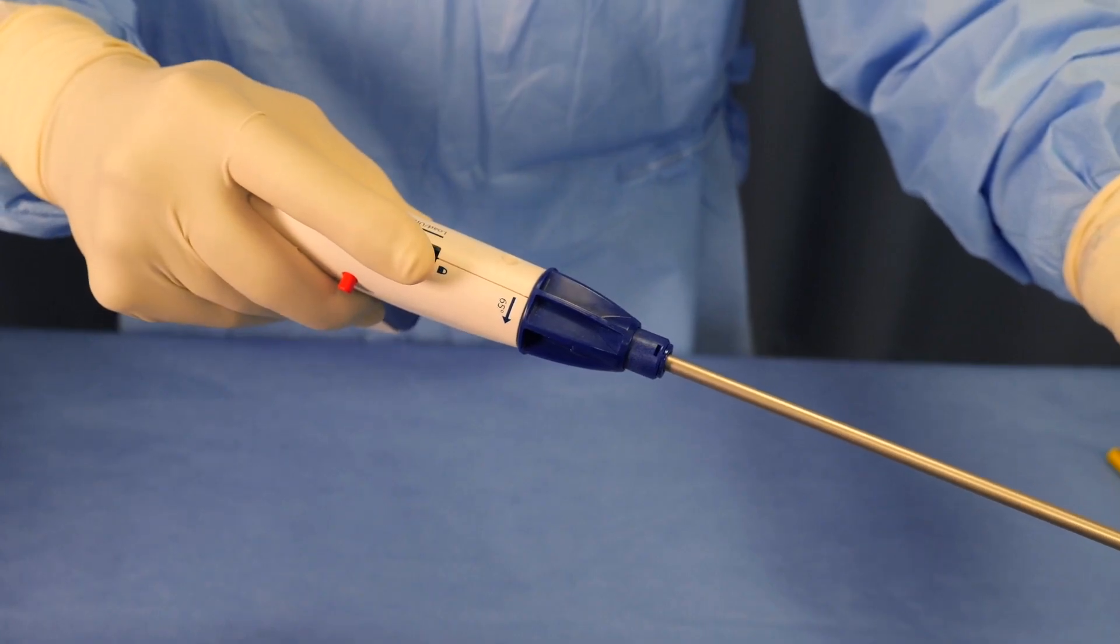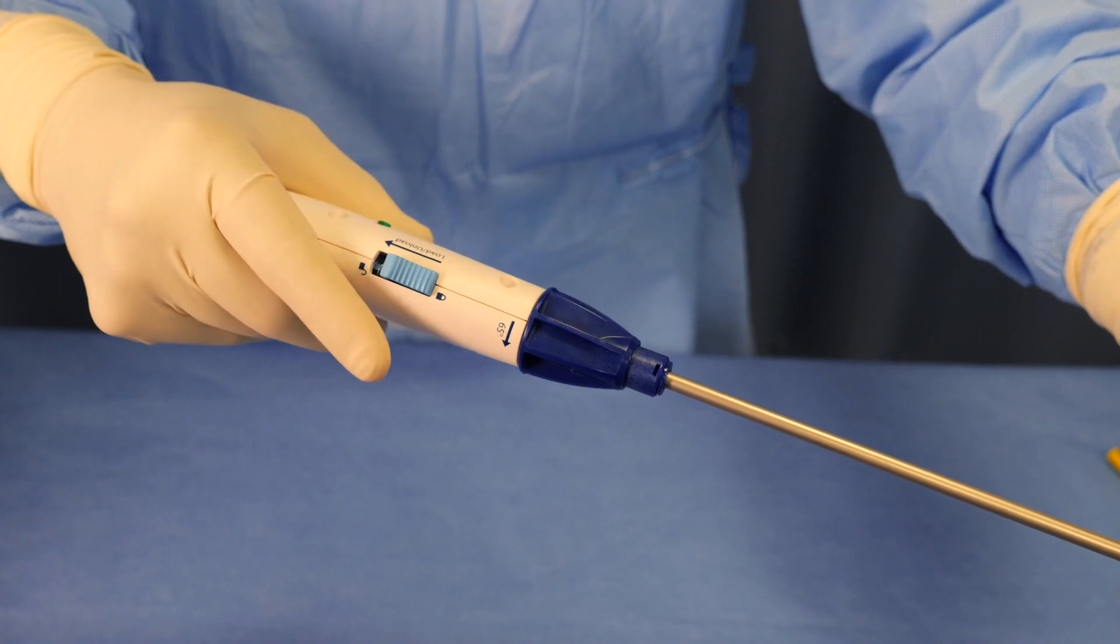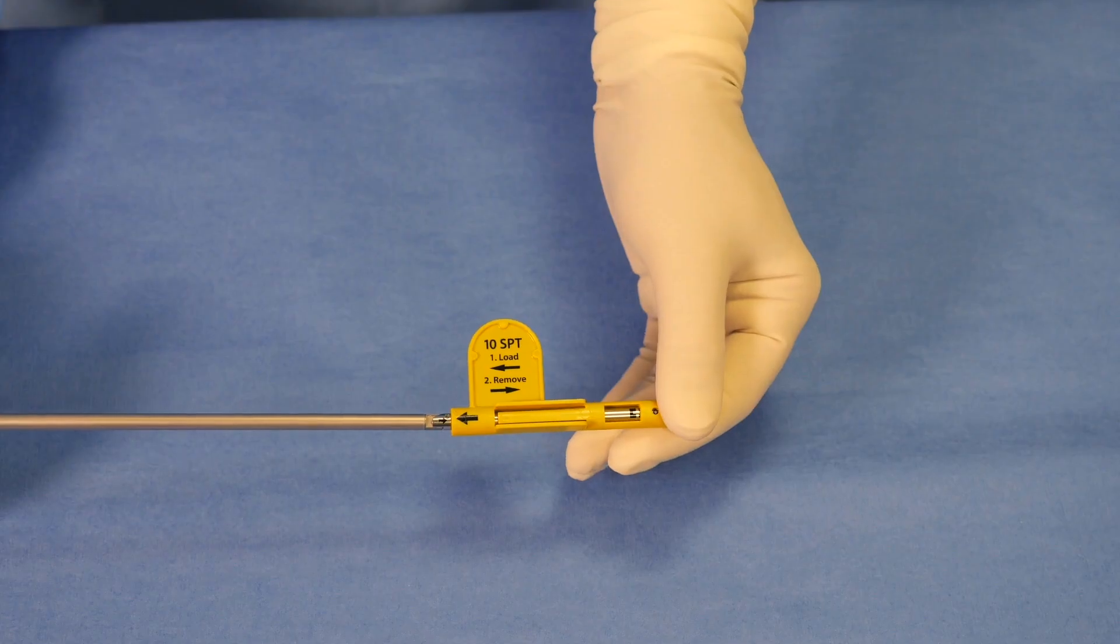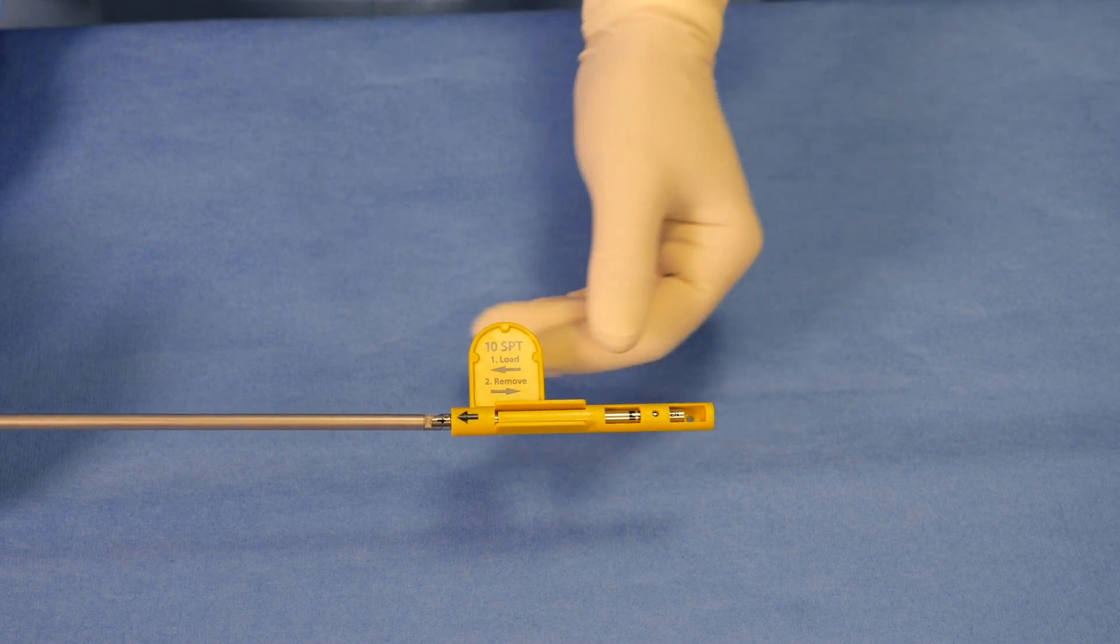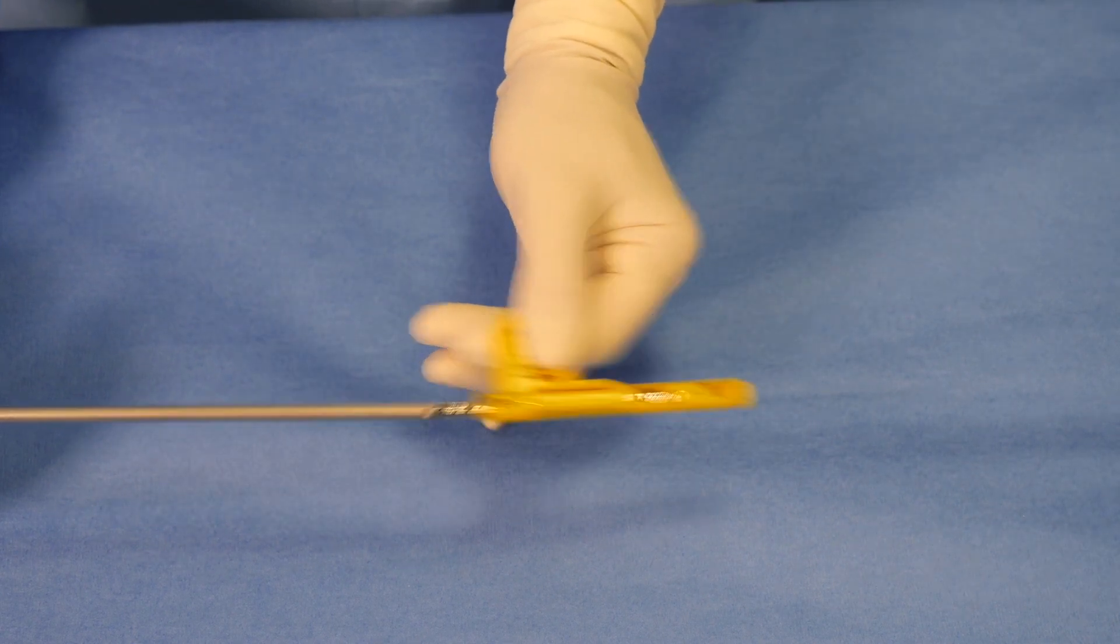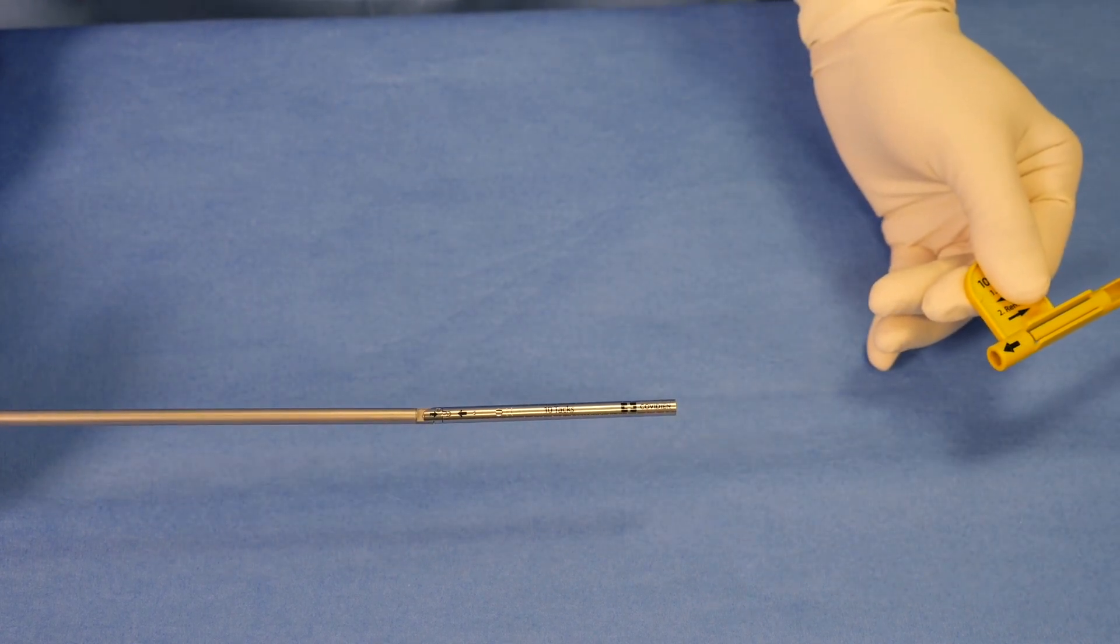Release the lock switch button, allowing it to return to the forward position. Gently pull on the reload to confirm that the device is properly loaded. Remove the shipping wedge once the reload is properly locked and loaded.